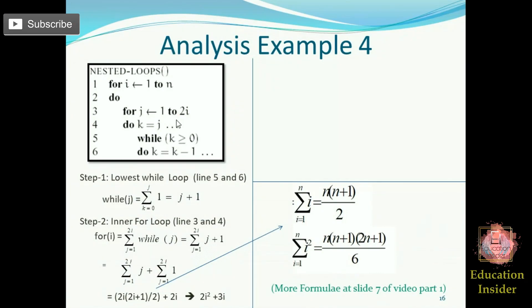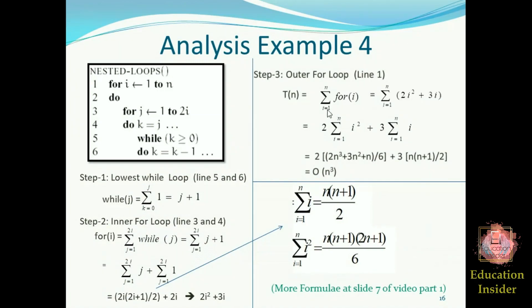So this 2i squared plus 3i is going to take the summation of i equals 1 to n. So this 2i squared plus 3i is going to take the summation from i equals 1 to n.